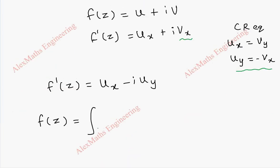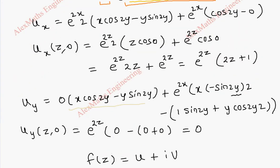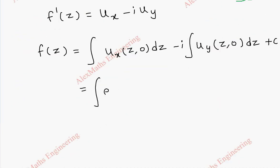So then f dash of z will be u_x minus i u_y. Now by Milne-Thomson method f of z will be integral u_x of z comma 0 into dz minus i integral u_y of z comma 0 into dz plus c. Now u_x of z comma 0 we got it here that is e power 2z into 2z plus 1. So integral e power 2z into 2z plus 1 dz and second term is fully 0 because u_y of z comma 0 is 0.